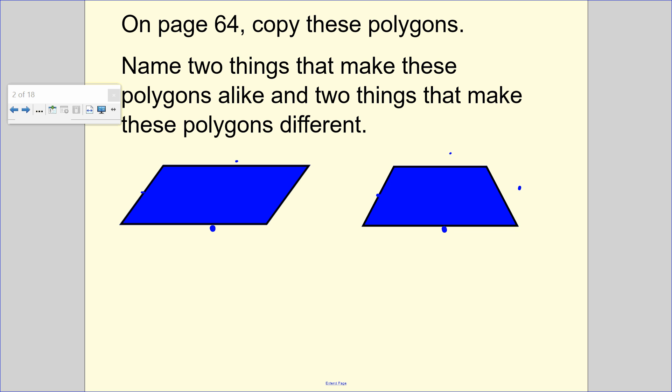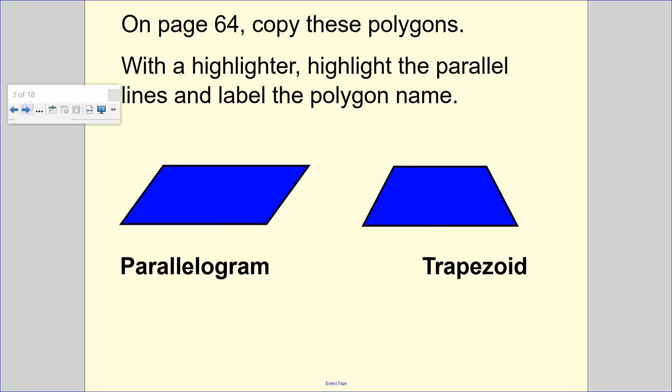What makes them different? Well, these are parallel. This one's also parallel, but this one is not parallel. So with a highlighter, I would like you to highlight the parallel lines and label the polygon names.